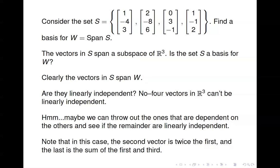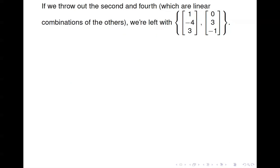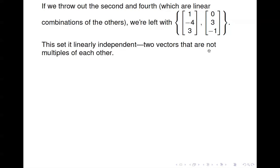In this case, the second vector is twice the first: 2×1=2, 2×(-4)=-8, and so on. The last vector, v4, is the sum of the first and the third: 1+0=1, -4+3=-1, and so forth. So v2 is dependent on v1, and v4 is a linear combination of v1 and v3. We can throw those out, leaving us with just v1 and v3 — two vectors that are not multiples of each other, so they're linearly independent.